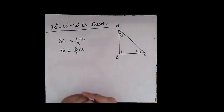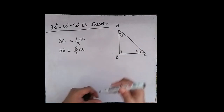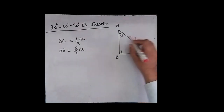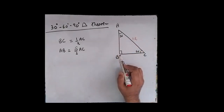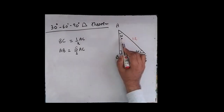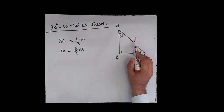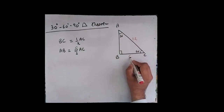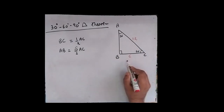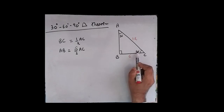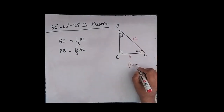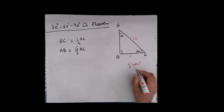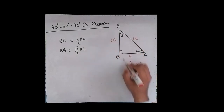How will you use this theorem? For example, if hypotenuse AC is given as 12, we can find the lengths of BC and AB. The theorem says the side opposite to 30 is half of the hypotenuse. Half of 12 is 6, so side BC will become 6. The side opposite to 60 degrees is (√3/2) × hypotenuse 12, which gives us 6√3. So side AB will become 6√3 units.